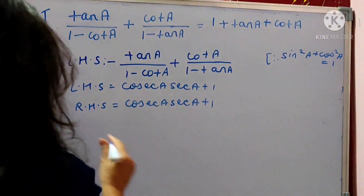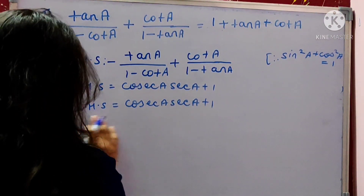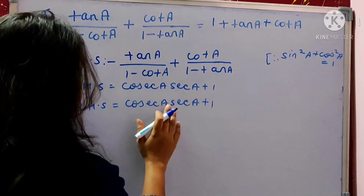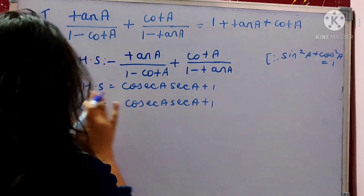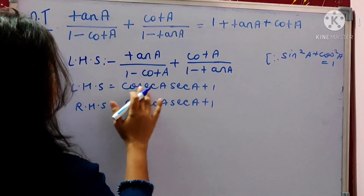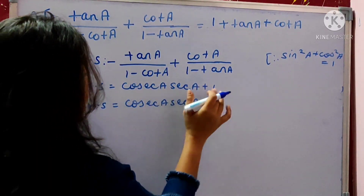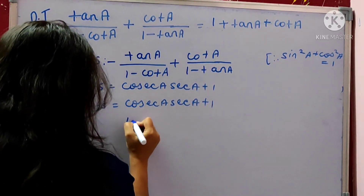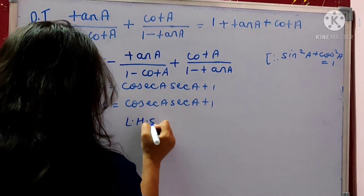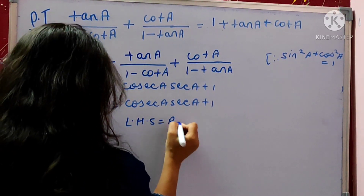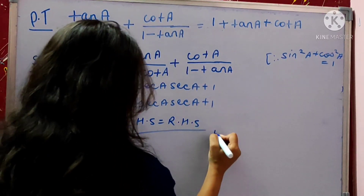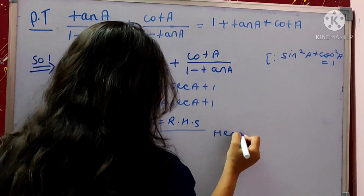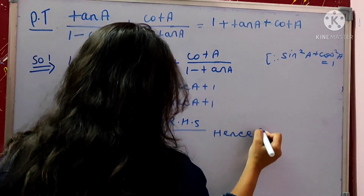Hence, we get the RHS part: cosec A plus sec A plus 1, and the LHS part: cosec A plus sec A plus 1. That means LHS is equals to RHS. Hence proved.